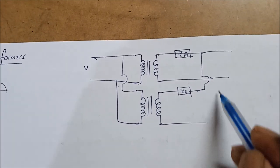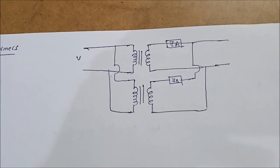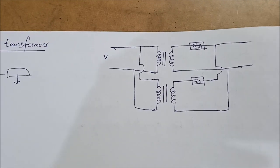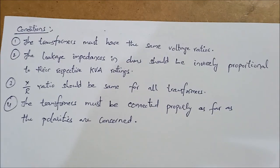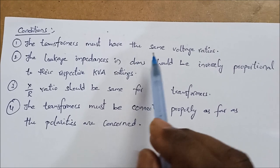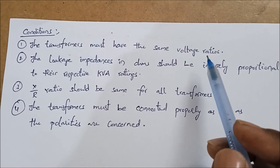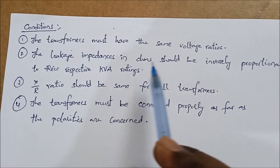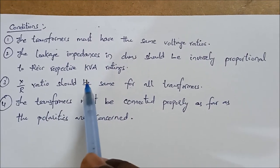If you want to connect two transformers in parallel, there are some conditions which must be satisfied. The first condition is that the transformers must have the same voltage ratios — that means if you give the same input voltage, the output voltage of all transformers should be the same. The second condition is that the leakage impedance in ohms should be inversely proportional with respect to their KVA ratings.